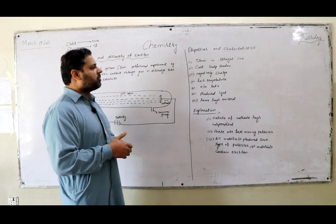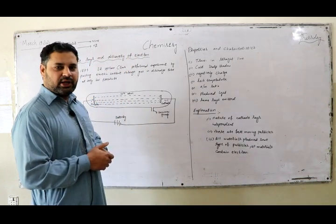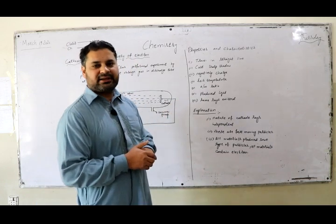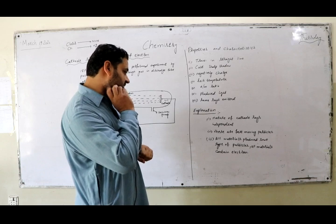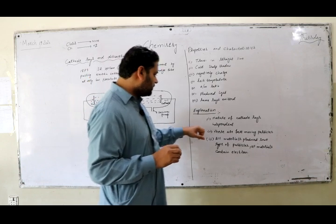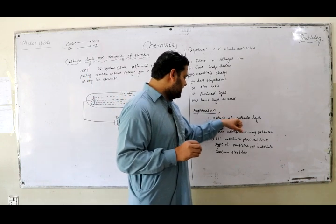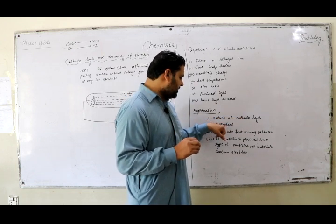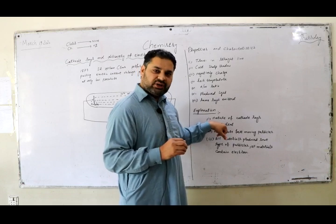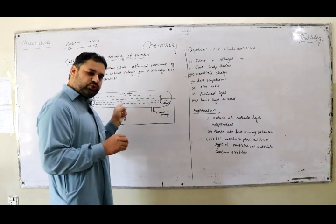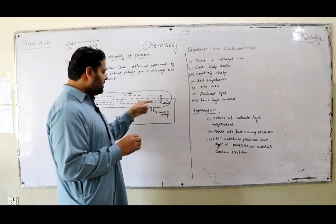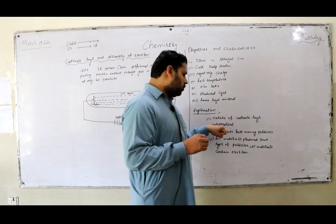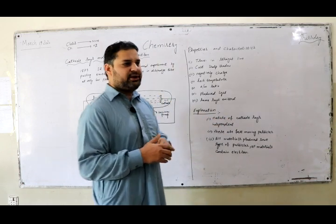These are a few properties and characteristics of cathode rays. Now, on the basis of these characteristics, some explanations are provided. Number 1: The nature of cathode rays is independent of which gas is used in the discharge tube and the electrode material.